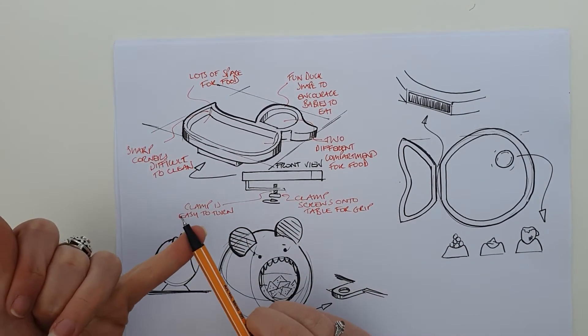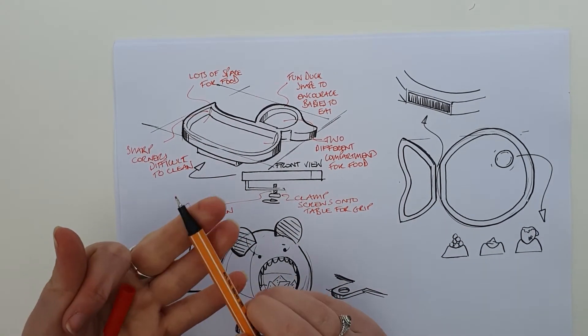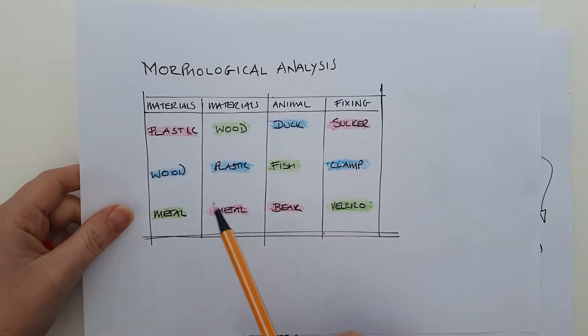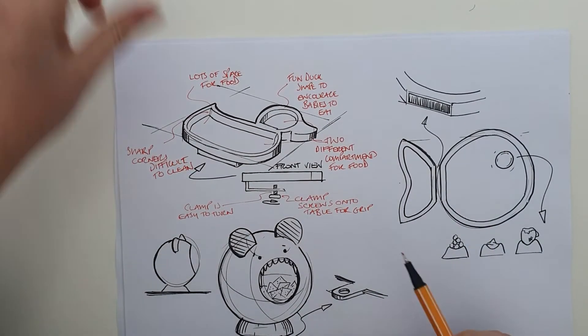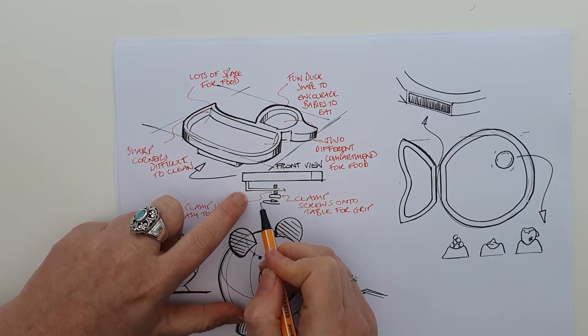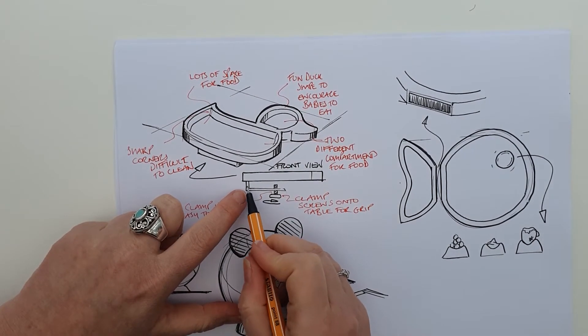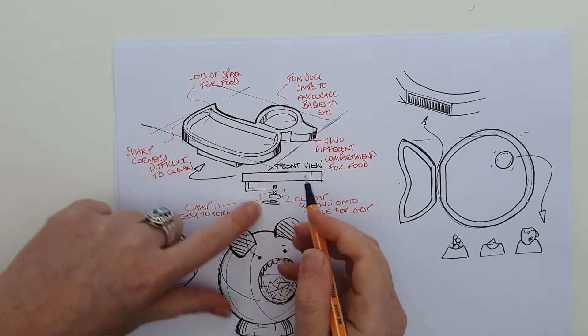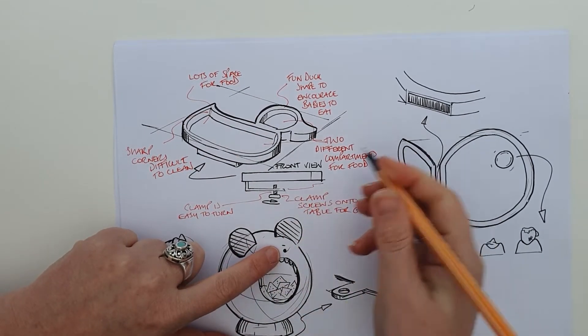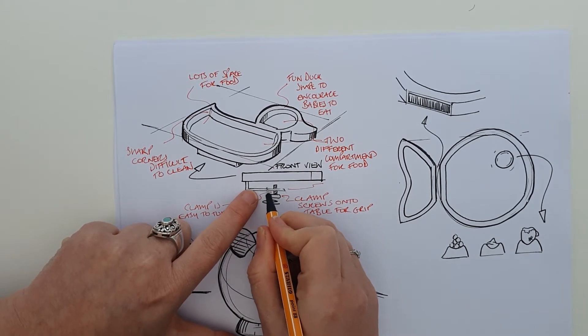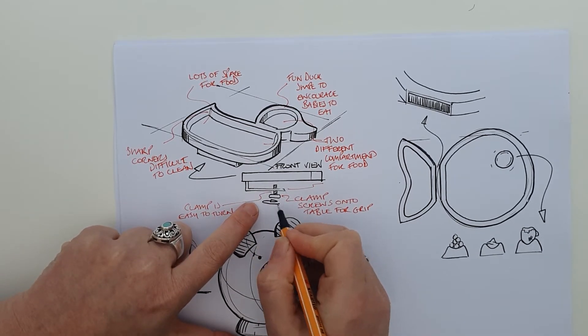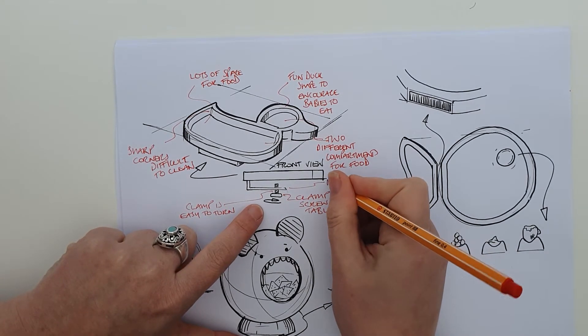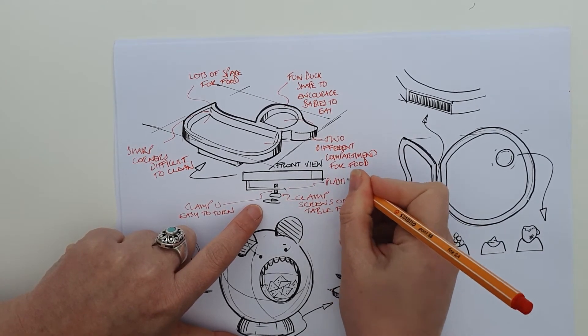So we've mentioned ergonomics, aesthetics, function. Okay, materials. So for the duck we had wood and plastic. So this part here is going to be plastic - the clamp part is plastic, and this part is wood. Plastic's good because it means it's going to slide over a surface easily if you're sliding it into a table.